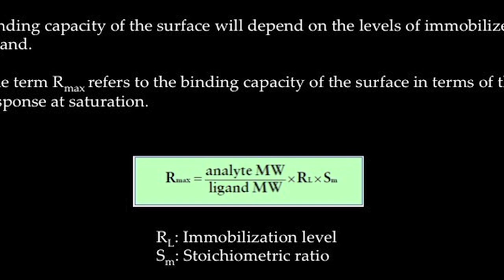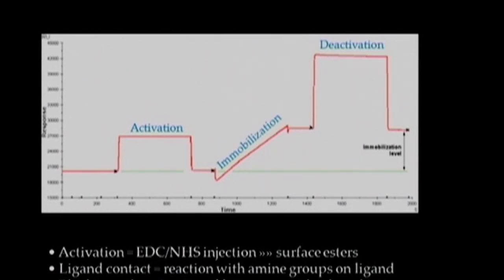A low Rmax is often beneficial in kinetic analysis, while higher immobilization levels are advantageous in binding analysis and concentration measurements. Today, we are going to immobilize the antibody on a CM5 chip using amine coupling chemistry and the figure here shows a typical immobilization sensorgram using amine coupling. The three major steps involved here are activation of the surface esters using EDC and NHS, covalent coupling of the ligand on the sensor chip using amine groups of the ligand and deactivation of free esters with ethanol amine. We will analyze the results of anti-beta-2 microglobulin immobilization later in the lecture.